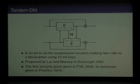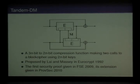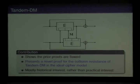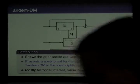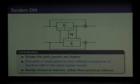However, its provable security has been elusive for many years, for about 20 years, until the first attempt was given at FSC 2009. And the next year, its extension was proposed at the Provable Security workshop. However, in this paper, we exhibited flaws of the prior collision resistance proof, and we also presented a novel new security proof for the collision resistance of the TandemDM compression function in the ideal cipher model.